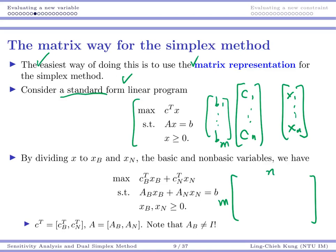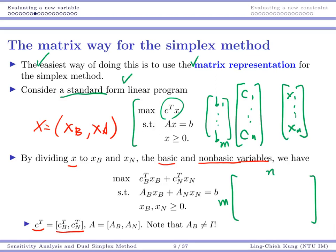For example, our objective function is c1*x1 + c2*x2 + c3*x3 + ... + cn*xn. What I want to do now is divide x into two parts called xB and xN, where xB is the basic variables and xN is the set of non-basic variables. Once I do that, my c vector should also be divided accordingly into cB and cN, and matrix A should also be divided into submatrices by selecting the basic columns and non-basic columns to get AB and AN.